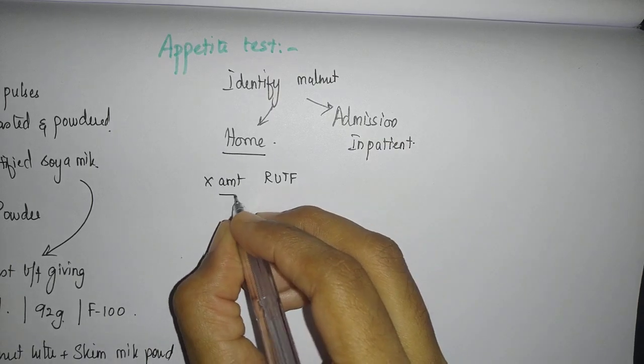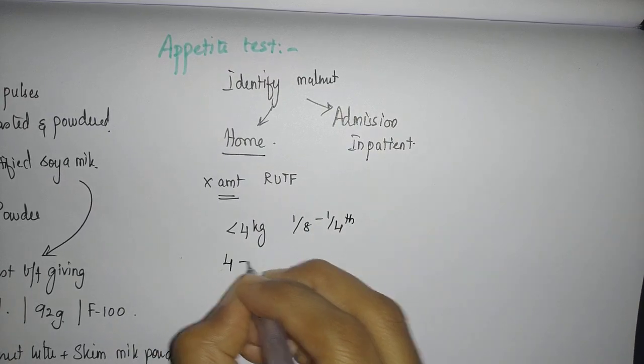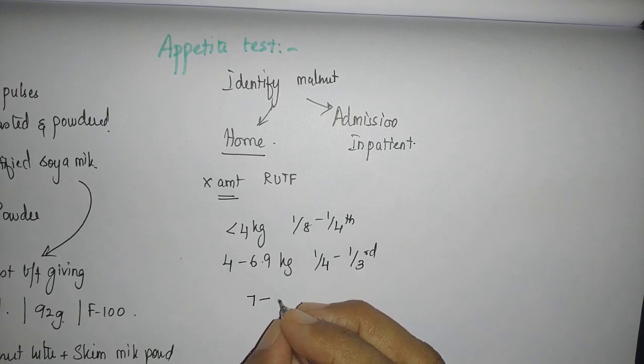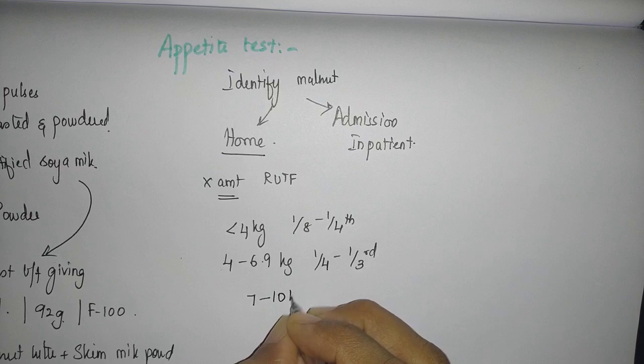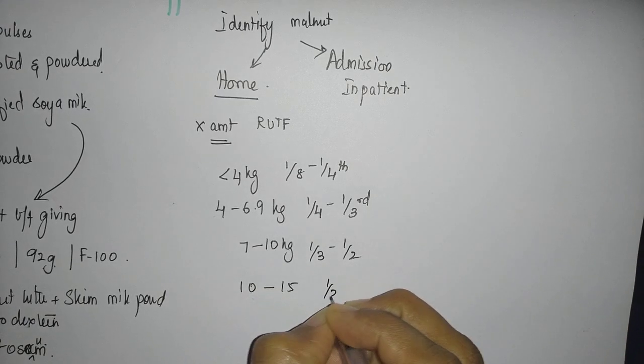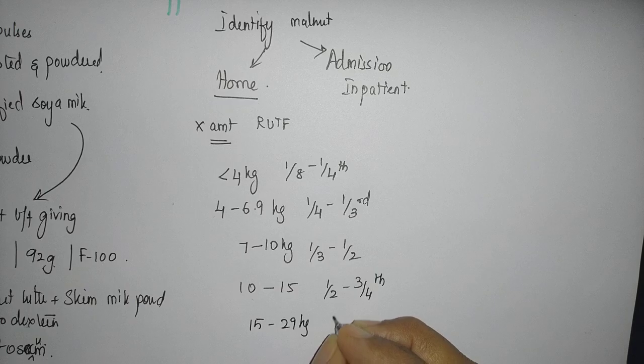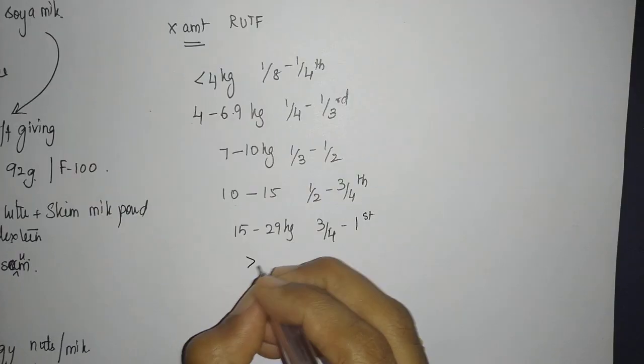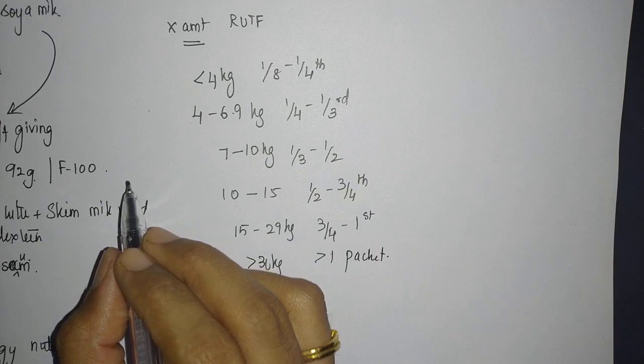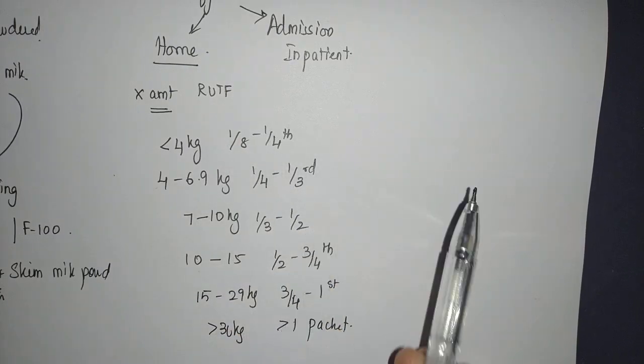The amount is determined by weight. Less than 4 kg child has to complete approximately one-eighth to one-fourth. Four to 6.9 kg child should finish approximately one-fourth to one-third. A child between 7 to 10 kg should take between one-third to one-half. Ten to 15 kg, half to three-fourths of the sachet. Fifteen to 29 kg, the child should be able to complete three-fourths to one sachet. More than 30 kg, more than one packet the child should be able to complete. If the child is able to do that, send the child home and follow up. If the child is not able to do that, then admit, monitor, and then decide. If the child is able to take this required amount, then the child can be discharged.